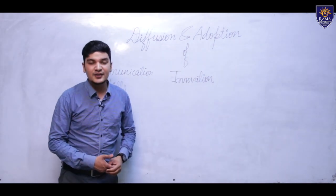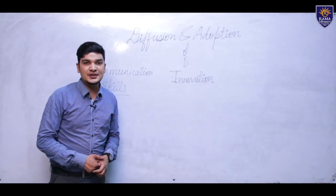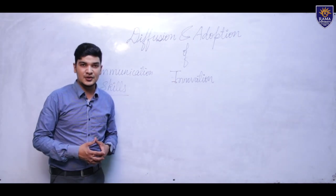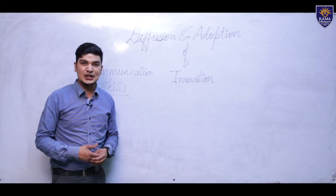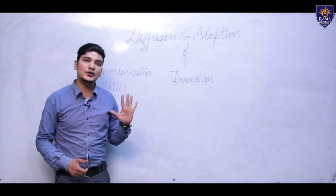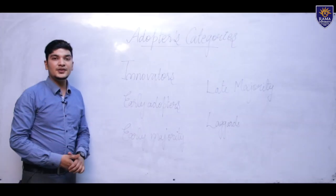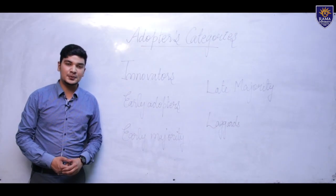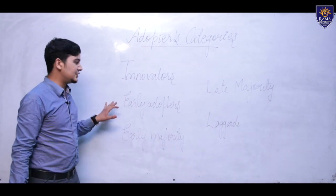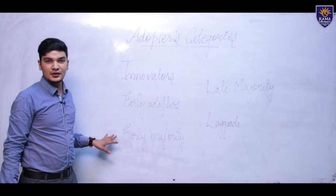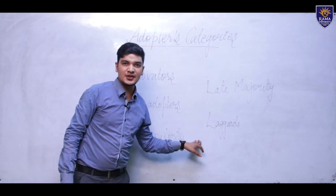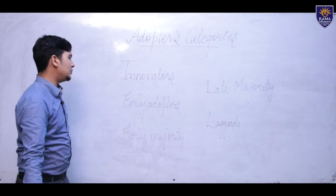Our society is categorized into certain types of adopters, which in extension language we call the adopter categories. There are five adopter categories: the first are the innovators, the second are the early adopters, the third are the early majority, next are the late majority, and finally the laggards.